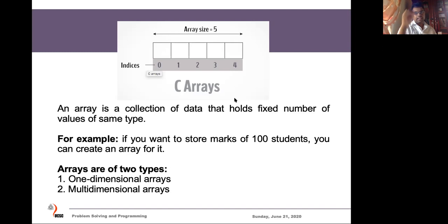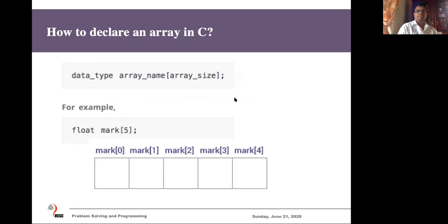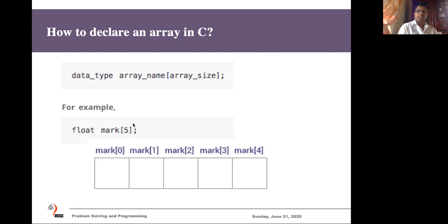When discussing arrays, there are two types we can identify: one-dimensional arrays and multidimensional arrays. When you want to declare an array in C, you give a data type, then the name for the array, then a square bracket with the size inside. This size is fixed and must be declared at the beginning. For example, to keep marks, we can create an array for marks with size five and type float, since we want decimal numbers.